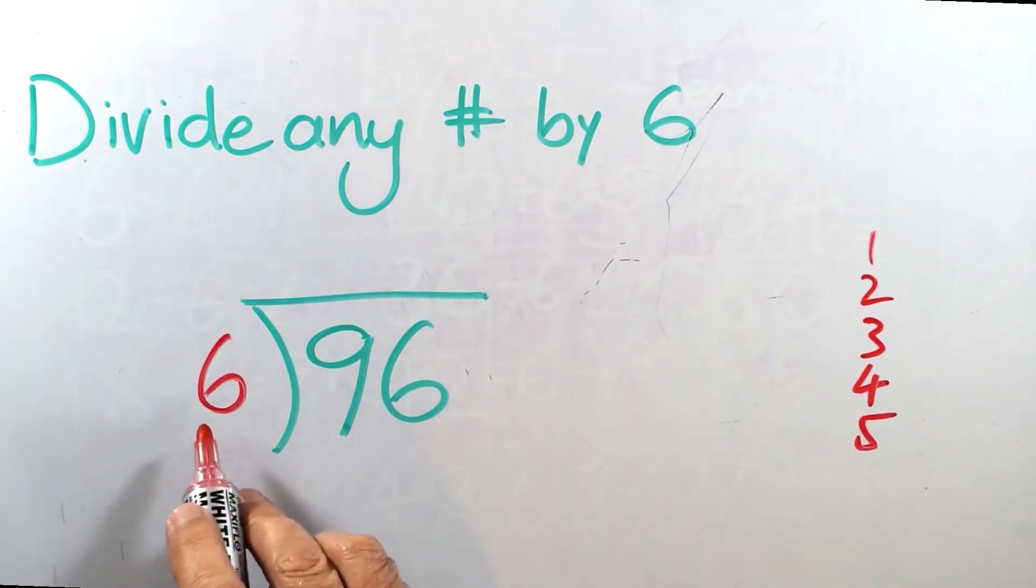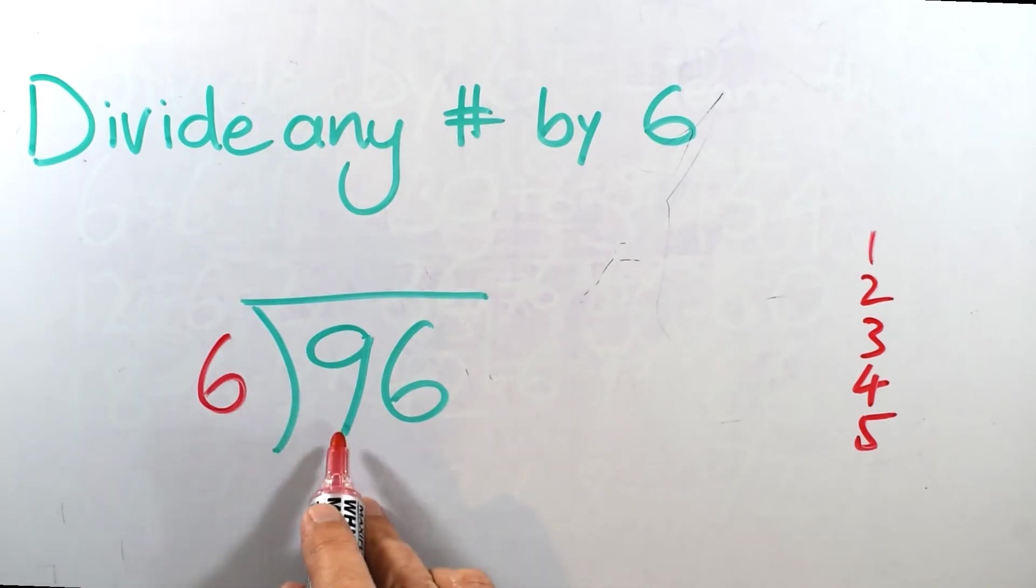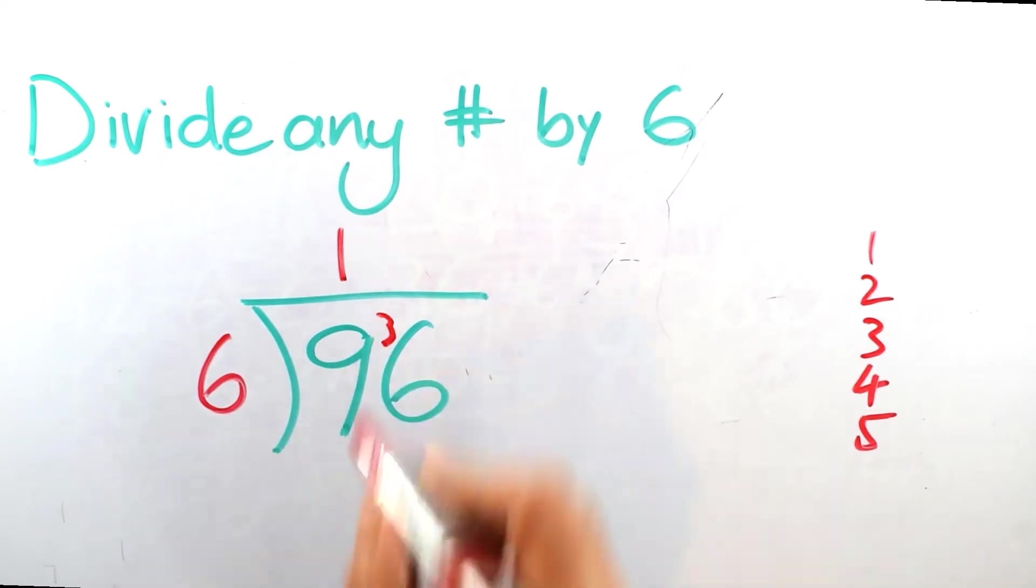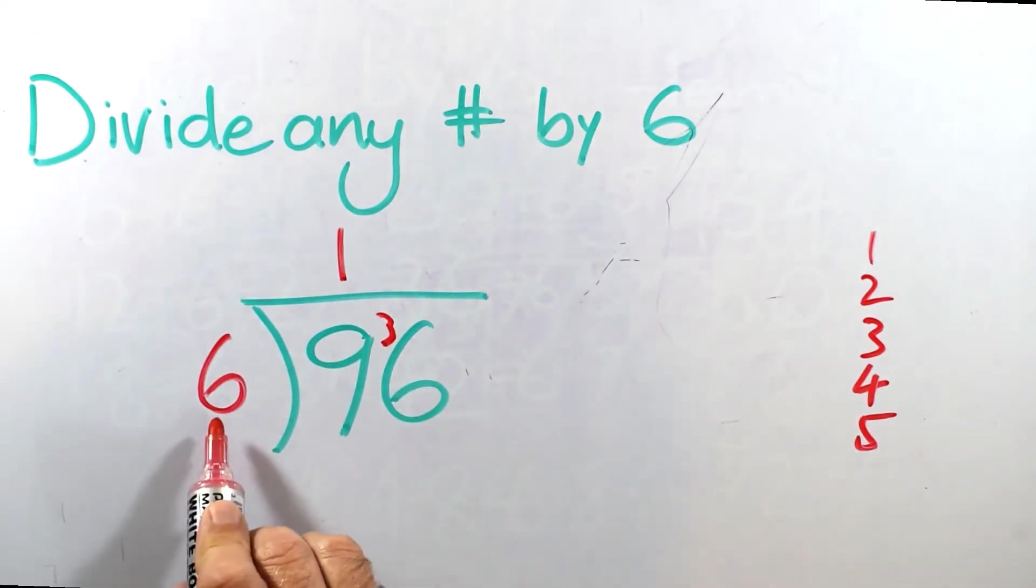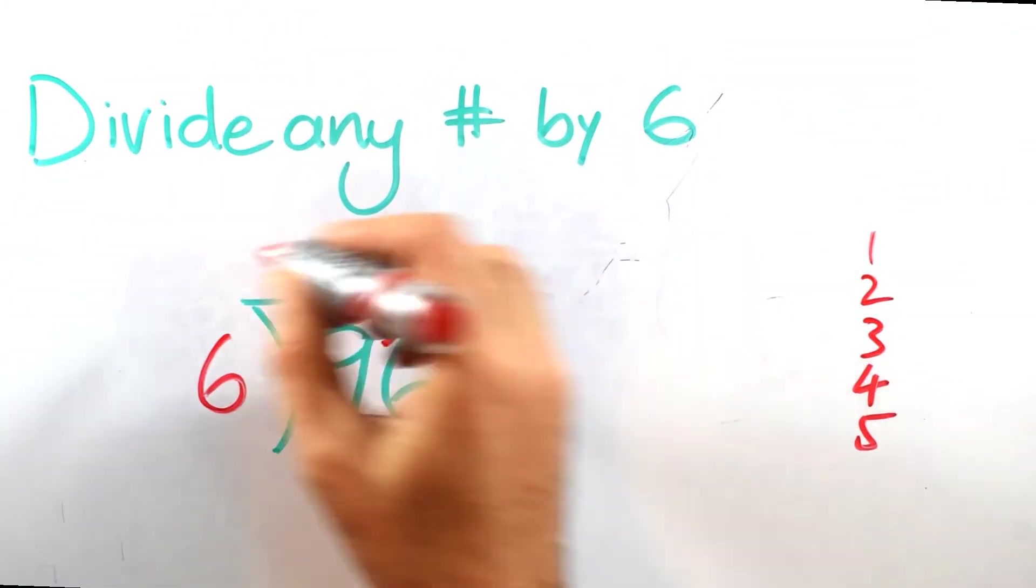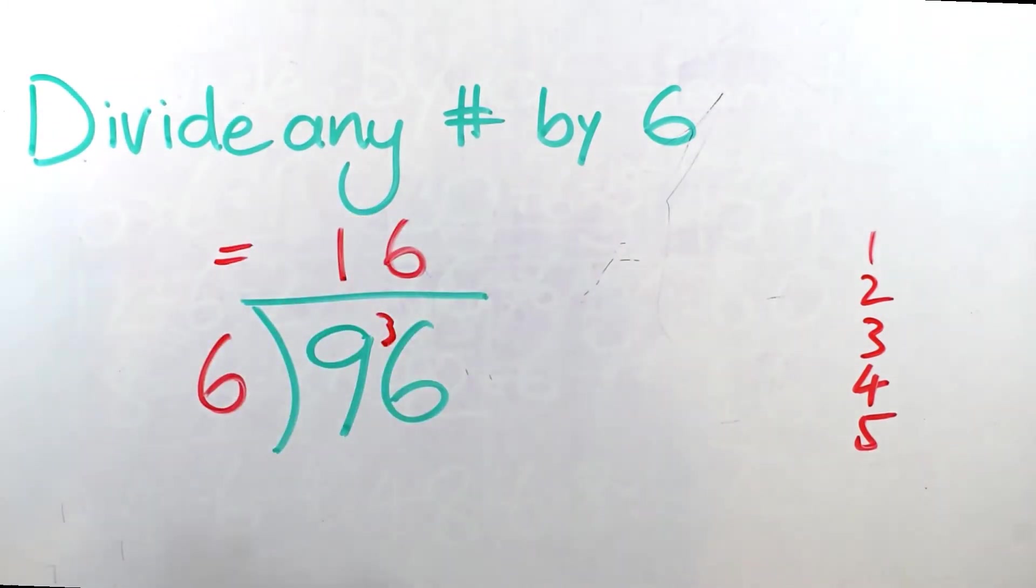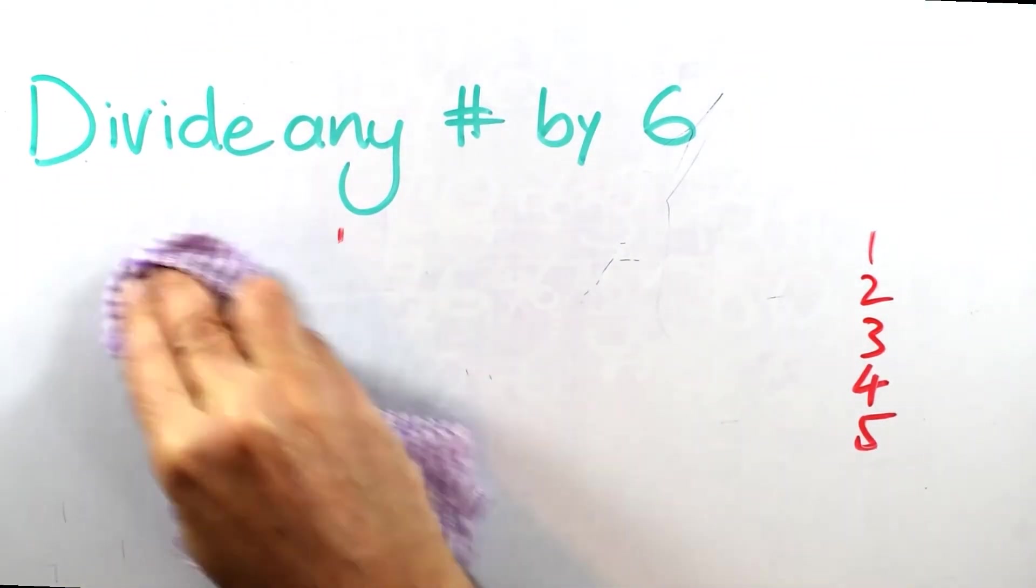So same sort of process. How many times does 6 fit into 9? Only once. And then there's 3 left over. 6 fits neatly into 36. You'll remember 6 times 6 is 36. 6 times. So 96 divided by 6 is 16. Pretty easy, right? So this strategy is useful for numbers that get a bit large too.